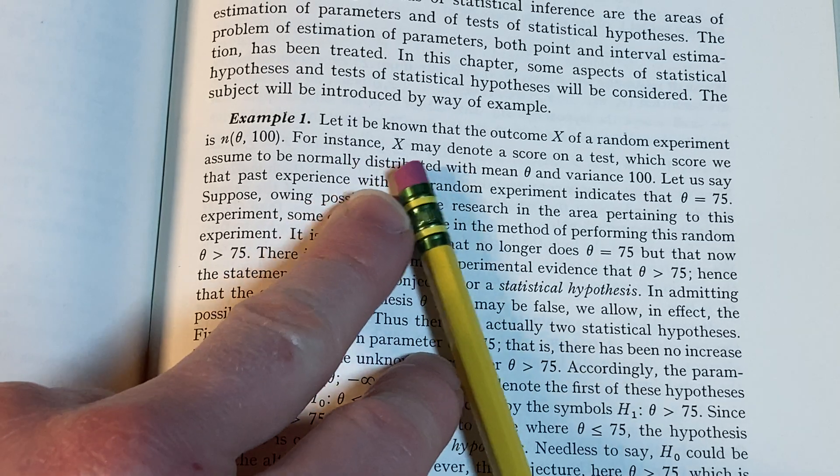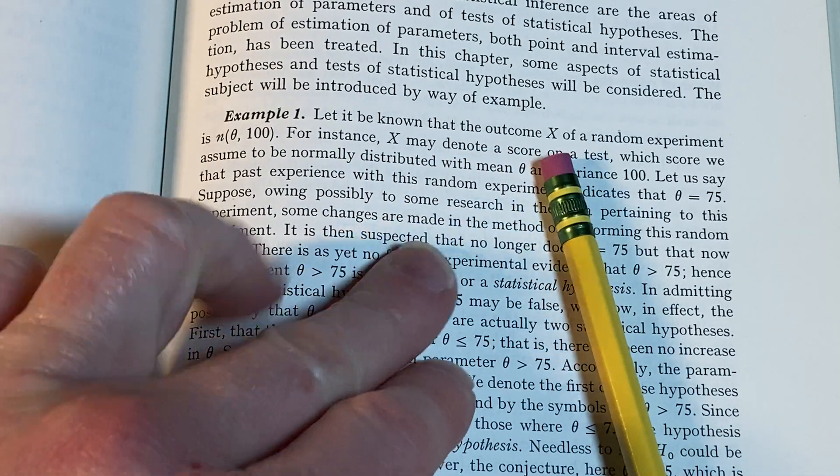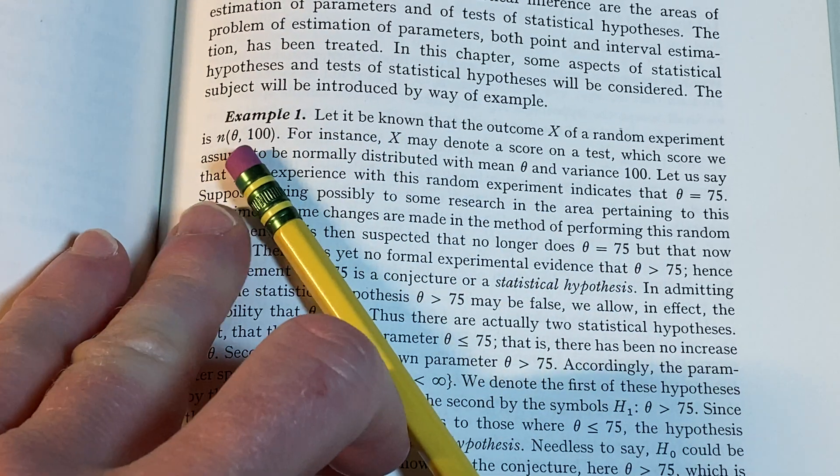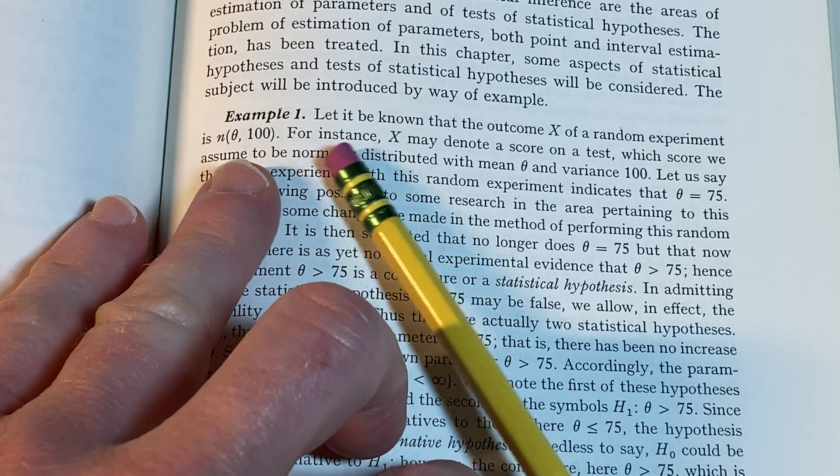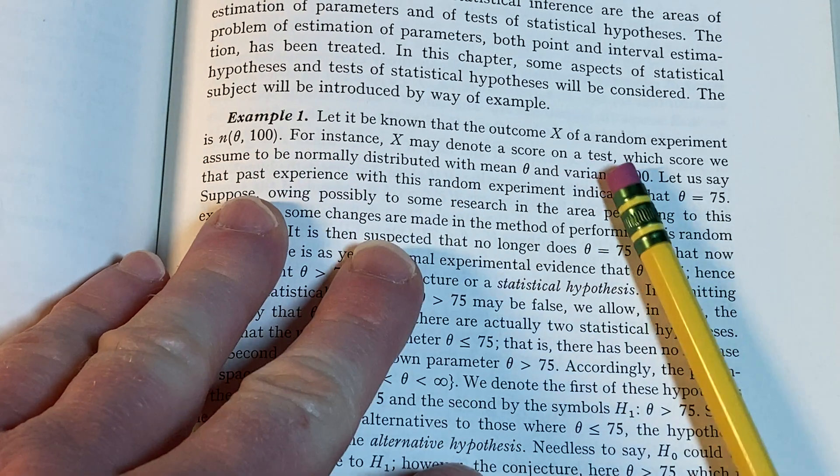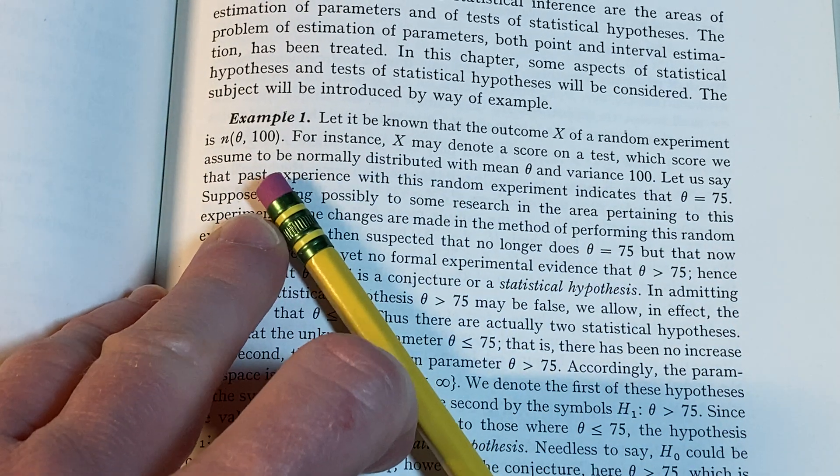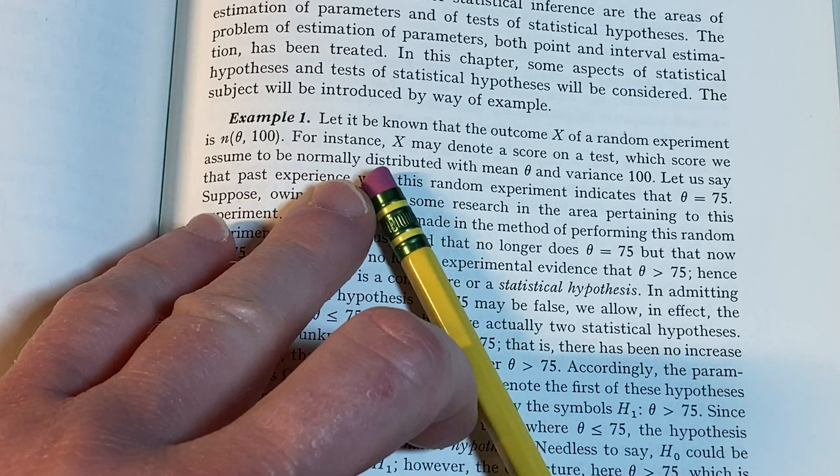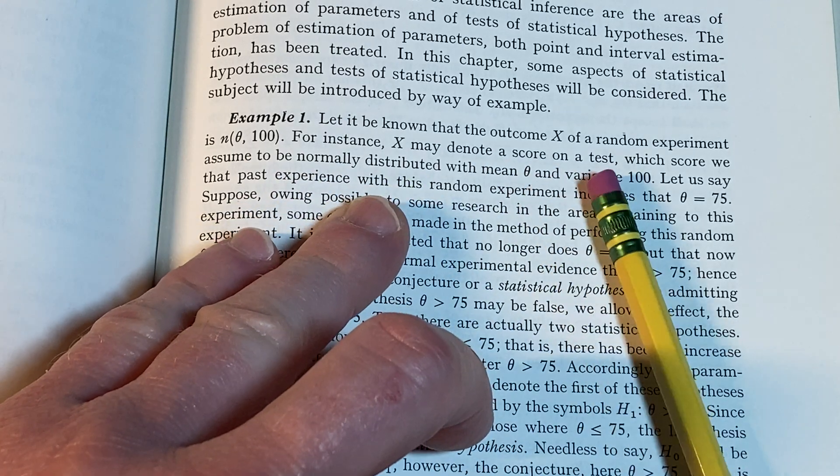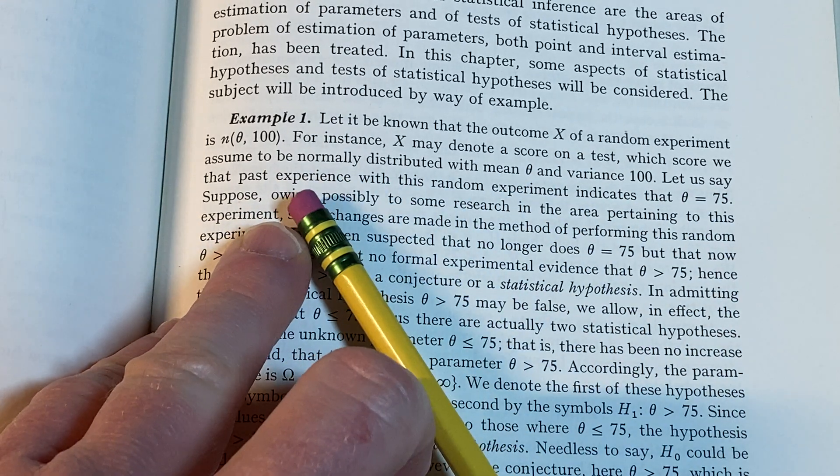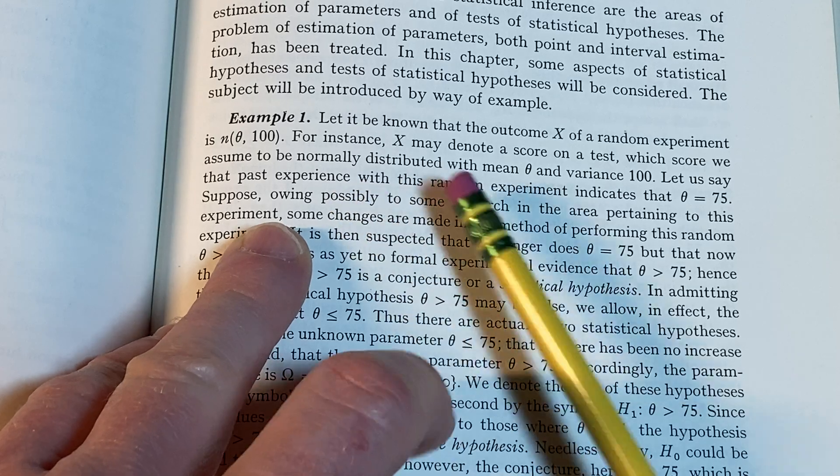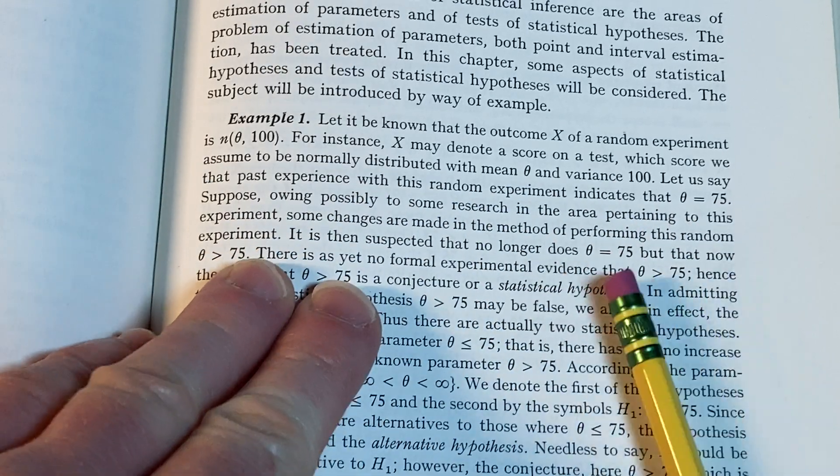So here's an example. Let it be known that the outcome x of a random experiment is n(θ, 100). For instance, x may denote a score on a test, which score we assume to be normally distributed with mean θ and variance 100. Let us say that past experience with this random experiment indicates that θ is 75.